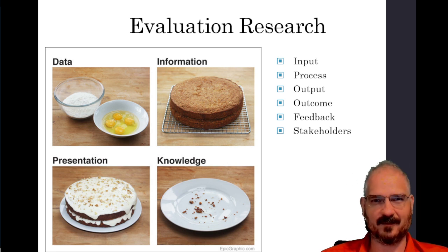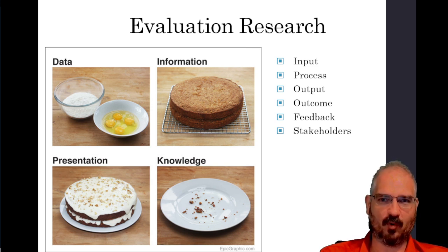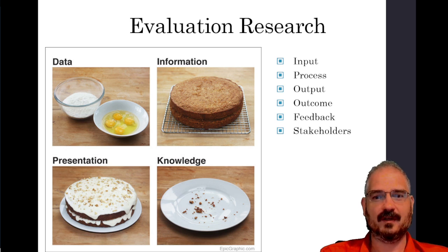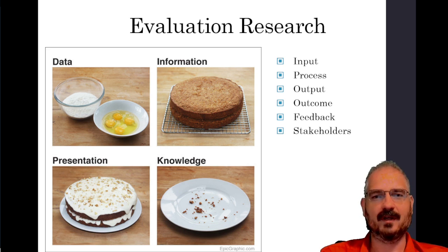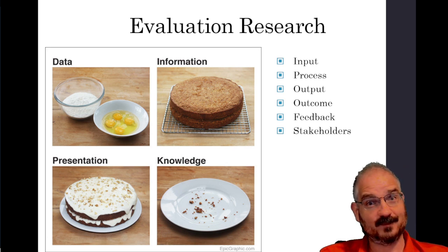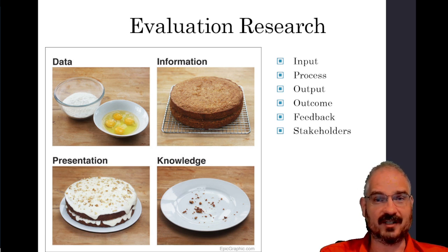We need feedback from all stakeholders — not just subjects — everybody who has an interest and has a say in how this process works, what good means, what bad means, what improvement means. All those stakeholders are very important. We need to constantly get information and input from them to make sure whatever we're trying to evaluate or change really has the results not only that we're intending but that we're measuring, because just measuring one variable doesn't mean we aren't inadvertently changing more than one.